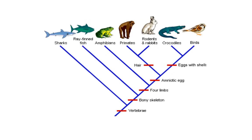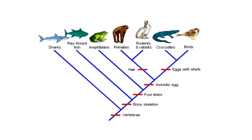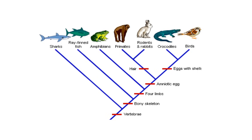As we move up the cladogram in this direction, we're going to get more and more exclusive. In other words, we're going to start looking at different traits. And as we move up the cladogram, what we will find is that we're going to start excluding different organisms from what we're talking about.